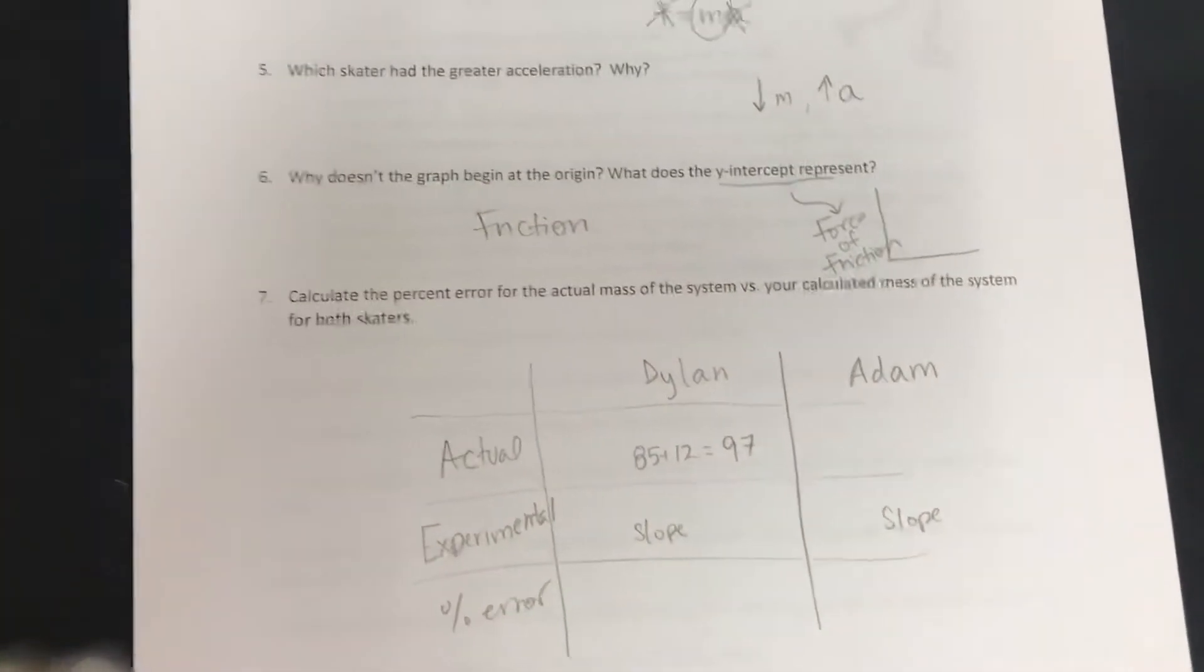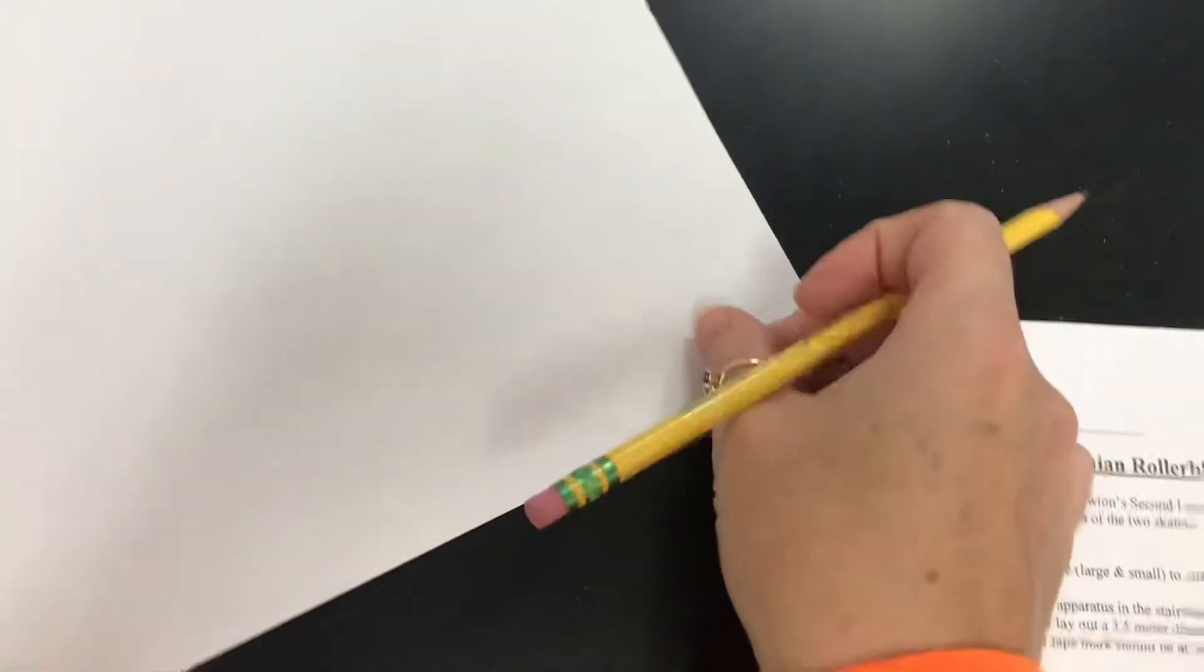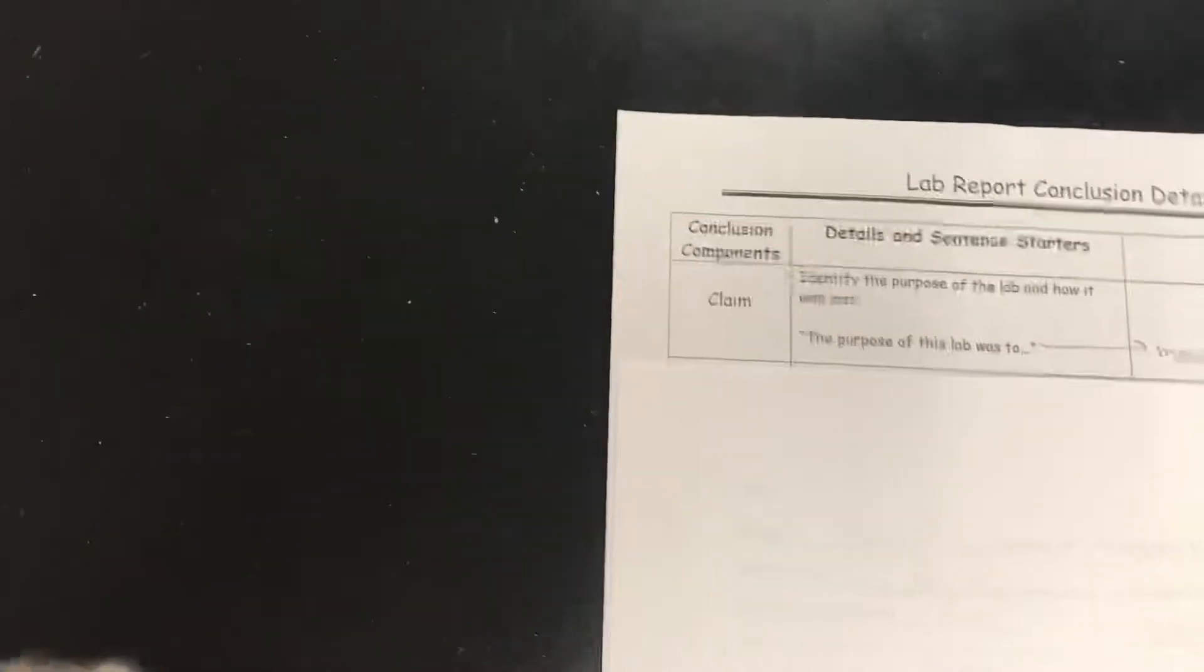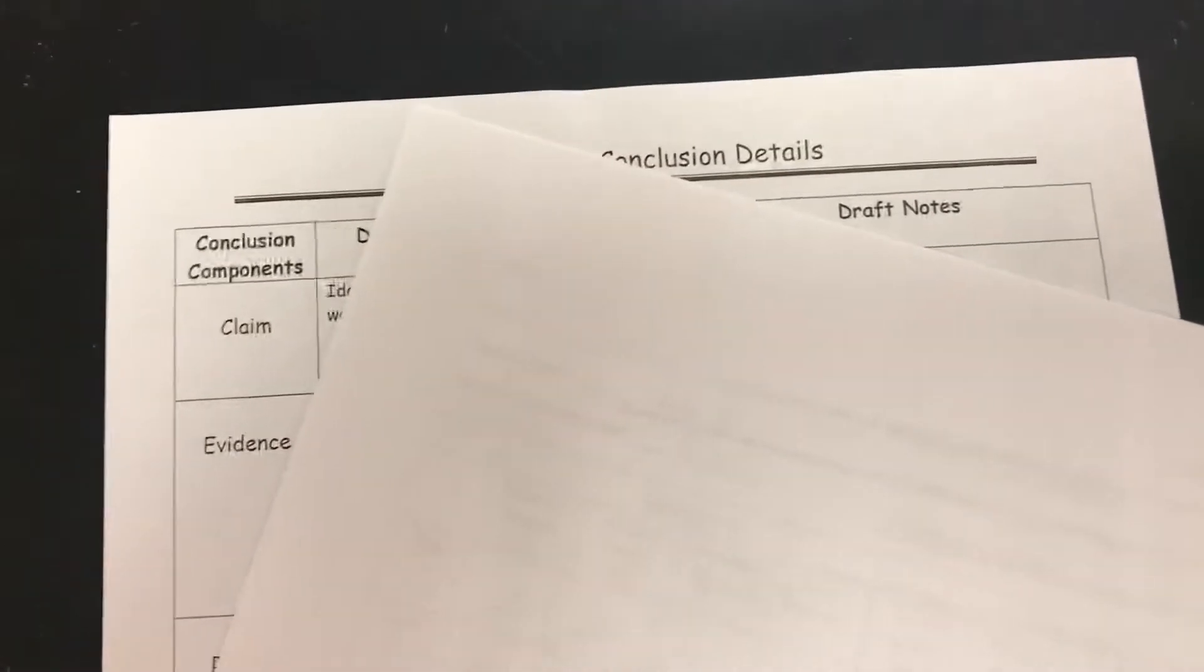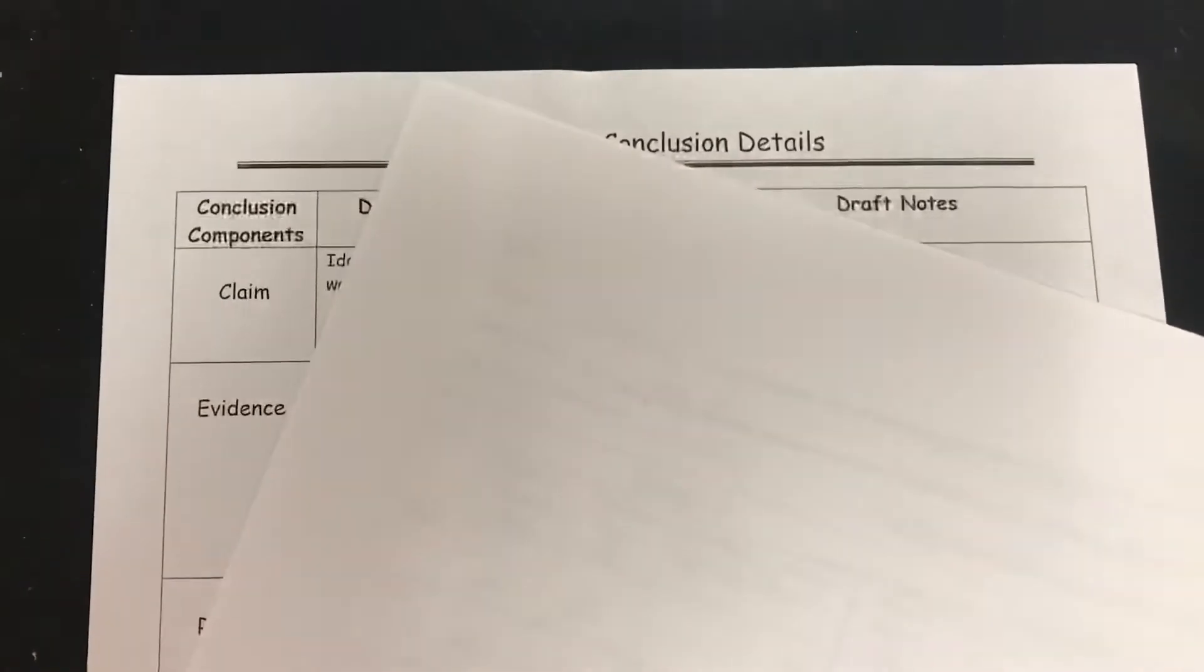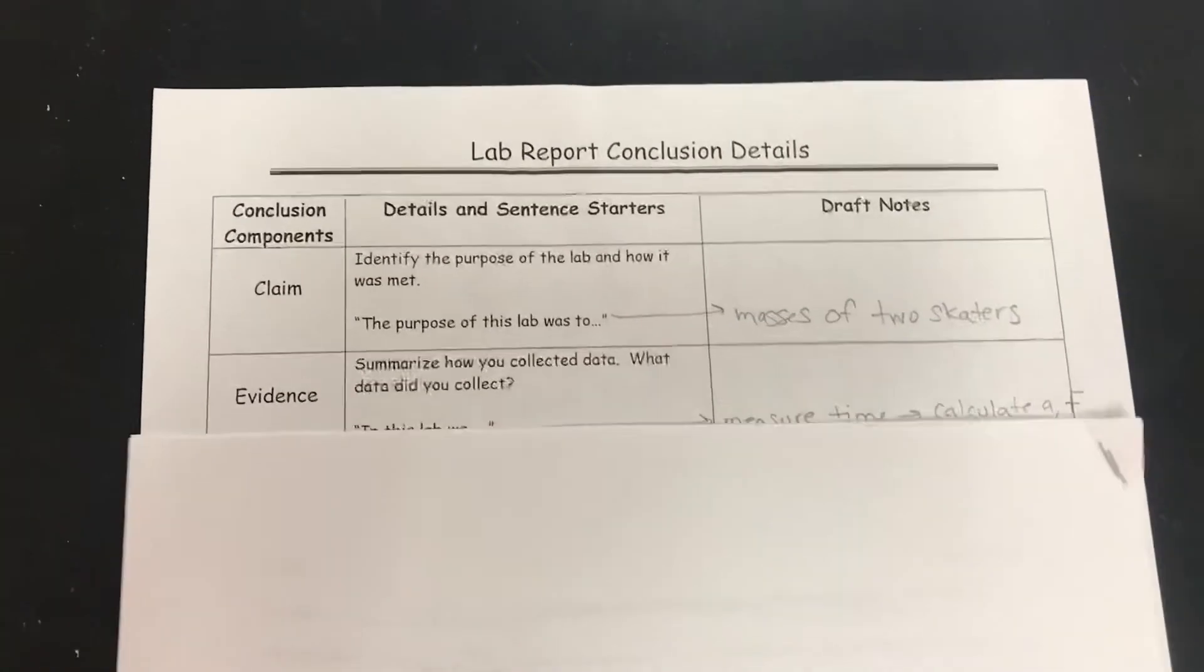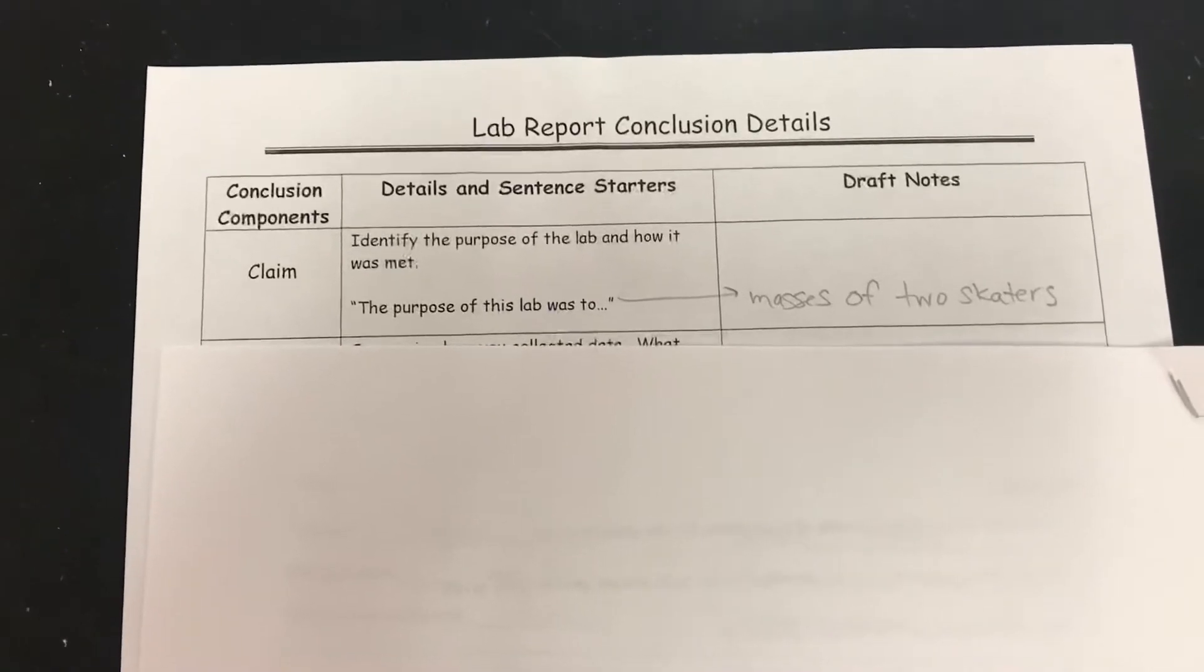Once you're done with that, we're going to write a conclusion. What I'd like to do is use this paper, and as we're going along, please stop the video and write the conclusion. So the first part of the conclusion is the claim. I want you to identify the purpose of the lab and how it was met.